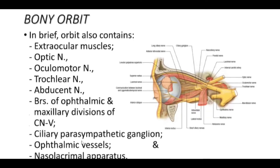The ophthalmic vessels supply the orbital tissues inside and provide the central artery of the retina, traveling along with the optic nerve to supply the retina. So the ophthalmic vessels supply all the orbital tissues.